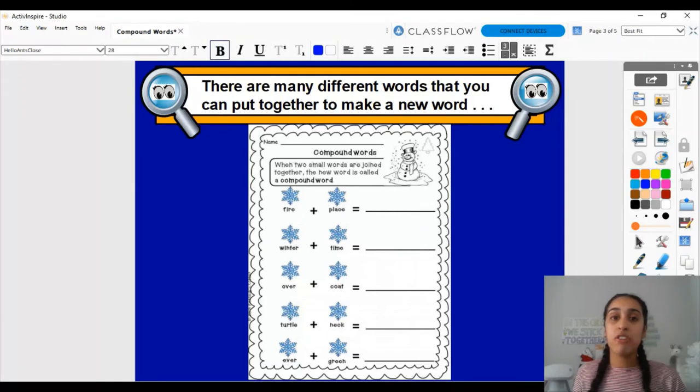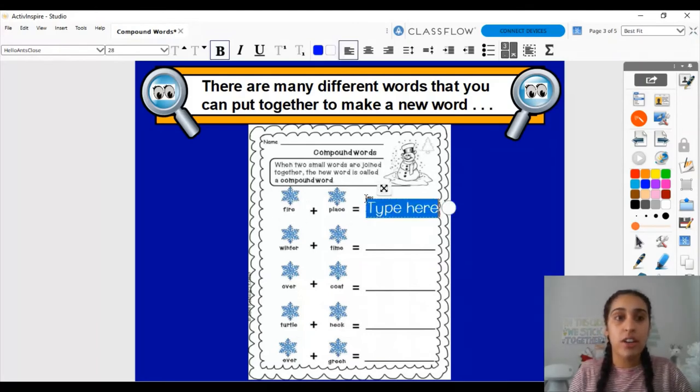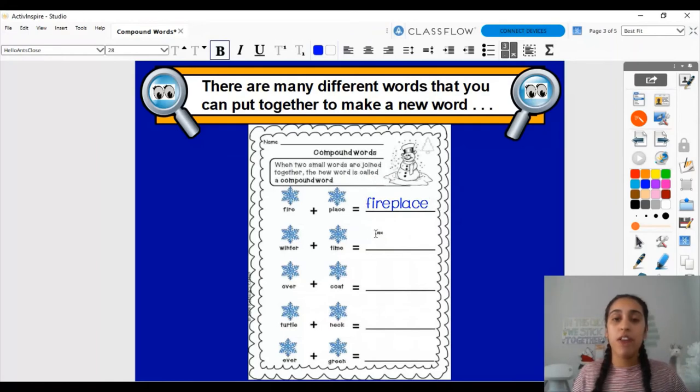So here we have our first activity worksheet and all of our worksheets are going to be focused on wintertime so that we can get ready for our holiday break. So here we go. So here we have a lot of words that need to be put together to make a compound word. So we did the first one together earlier. We have the word fireplace. And when we put it together, we have the word fireplace.